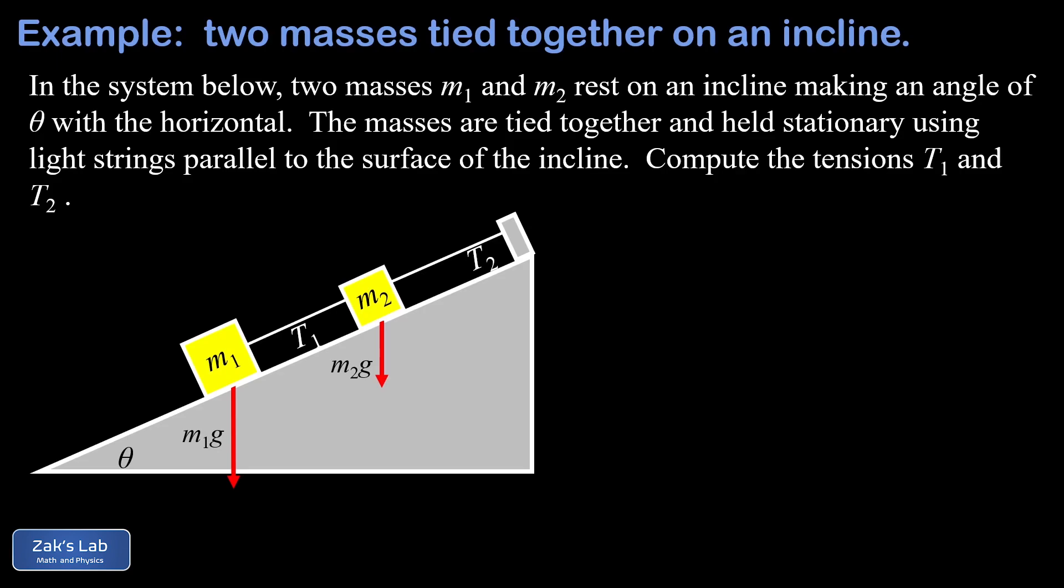Now, the next step is to break that force of gravity, that weight, into its parallel and perpendicular components. So here we're showing a perpendicular to the surface as a dashed line. And notice that the angle of incline for the ramp, theta, is the same as the angle between the vertical and the perpendicular to the ramp.